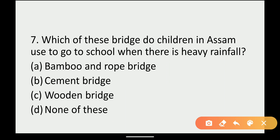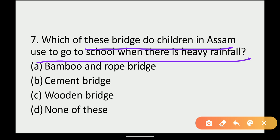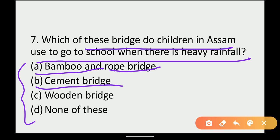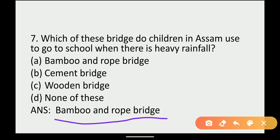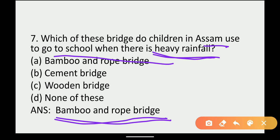Next: which bridge do children in Assam use to go to school when there is heavy rain? Option A: Bamboo and Rope Bridge. Option B: Cement Bridge. Option C: Wooden Bridge. Option D: None of these. The answer is Bamboo and Rope Bridge. In Assam, children use a bamboo and rope bridge when it rains heavily to go to school. Thank you for today.